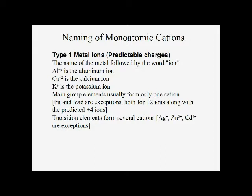For the metal ions that form predictable charges, these have been called type 1 metal ions. For the ones with predictable charges, all that we use to name them is the name of the metal. And if we're talking about the ion, we throw the word 'ion' after it. So aluminum with a plus three charge is the aluminum ion, calcium with a plus two charge is the calcium ion, and potassium with a plus one charge is the potassium ion.